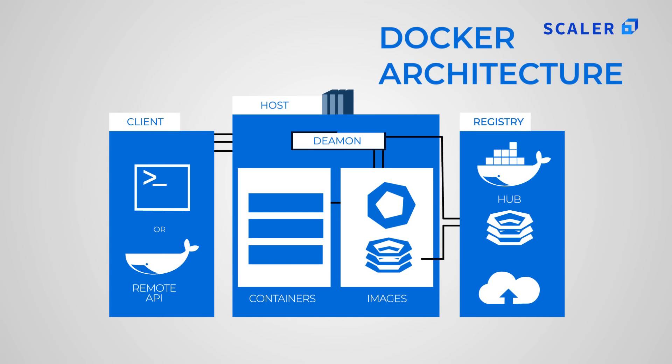To understand how Docker works, it is important to know its components. First, Docker daemon — it is responsible for all actions related to containers and receives commands from the Docker client using REST API or CLI. Second, Docker client — it can be on the same host as the Docker daemon or on another host.